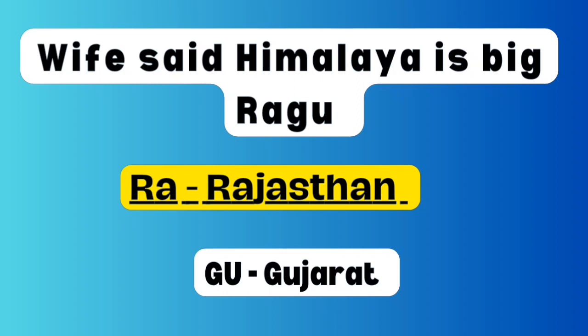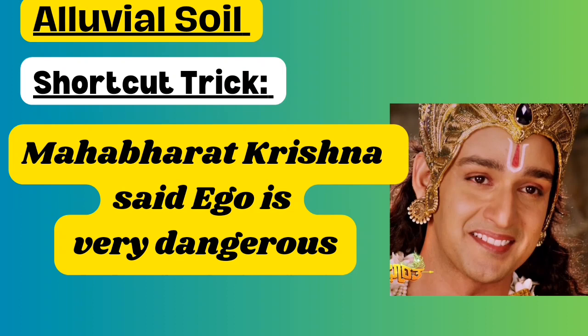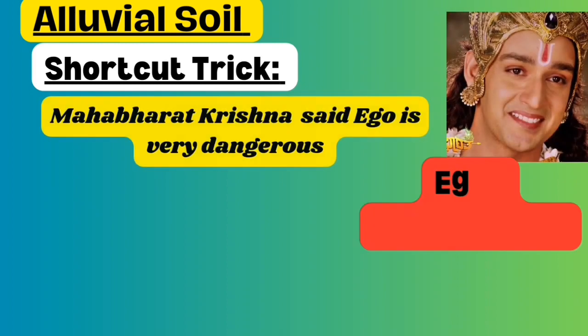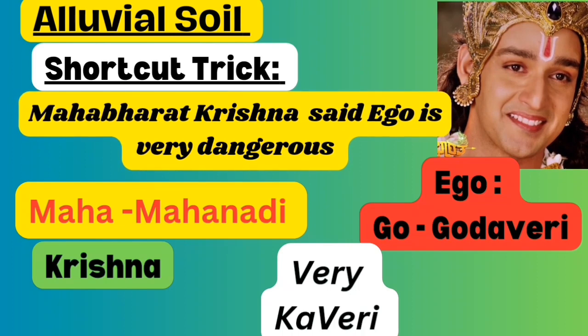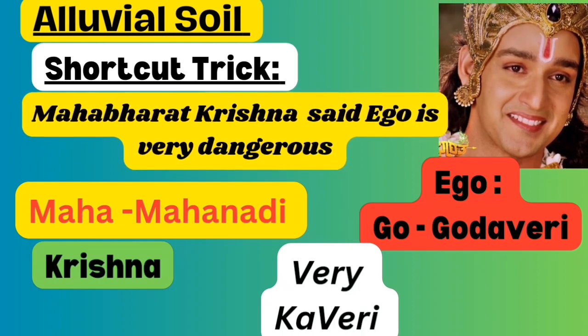The next shortcut is: 'IN MAHABHARATA, KRISHNA SAID EGO IS VERY DANGEROUS.' Take the word MAHABHARATA: Maha refers to Mahanadi, then KRISHNA refers to Krishna. Take GO from EGO - GO refers to Godavari. Take the word VERY - it refers to Kaveri. So alluvial soil is found in the deltas of Mahanadi, Godavari, Krishna, and Kaveri. Using this one sentence you can recall all the rivers easily.